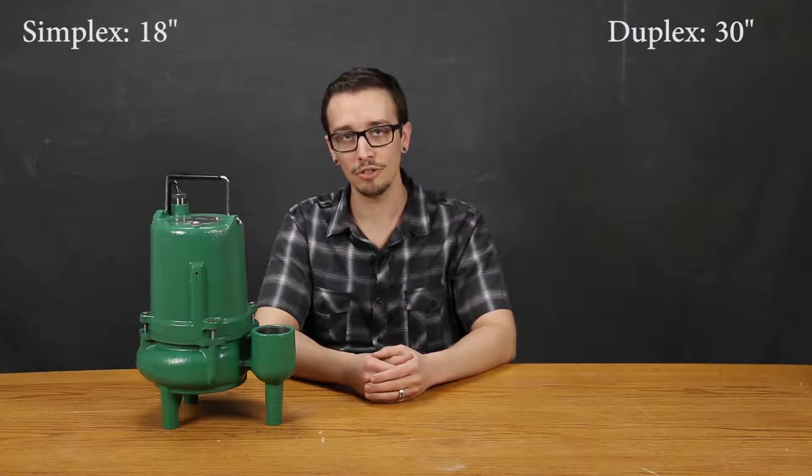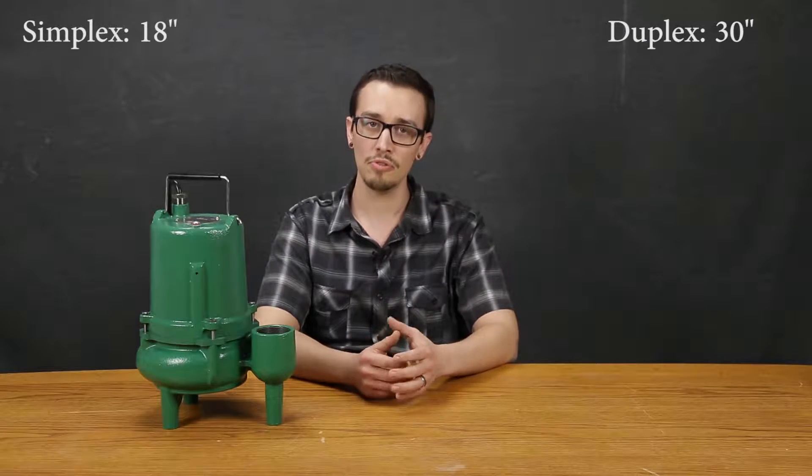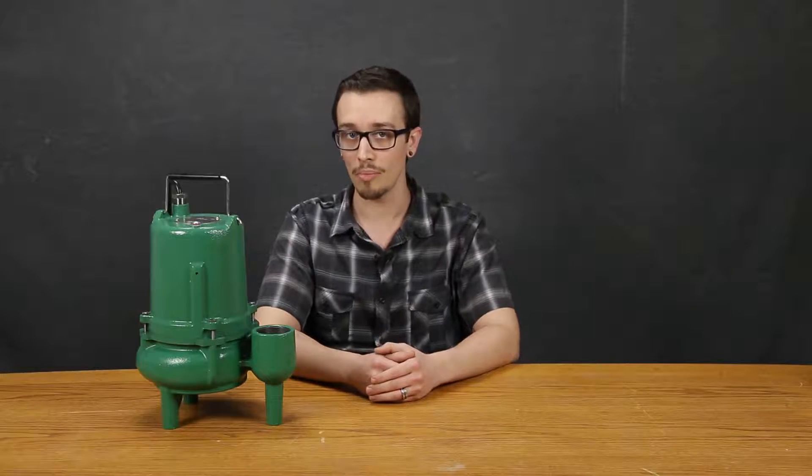The minimum sump diameter for these pumps in a simplex configuration is 18 inches and 30 inches for duplex configurations. By maintaining this minimal diameter we are ensuring that the equipment has enough room for proper operation and to eliminate entanglements of the cord.